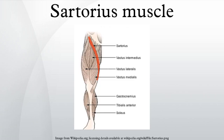The sartorius muscle — the longest muscle in the human body — is a long, thin muscle that runs down the length of the thigh in the anterior compartment. Its upper portion forms the lateral border of the femoral triangle.